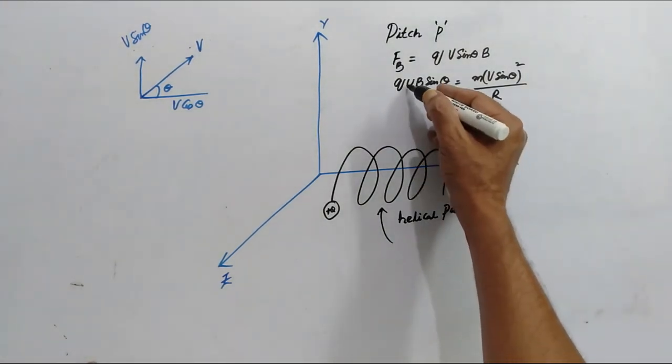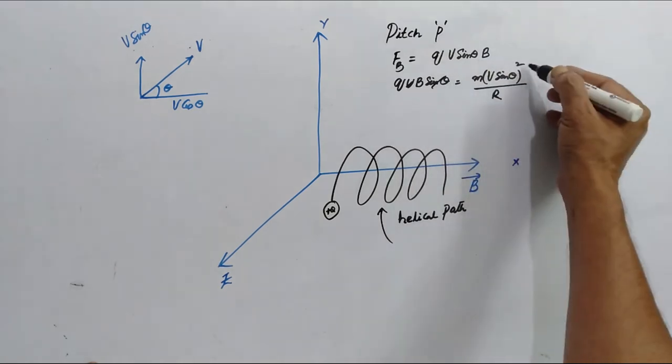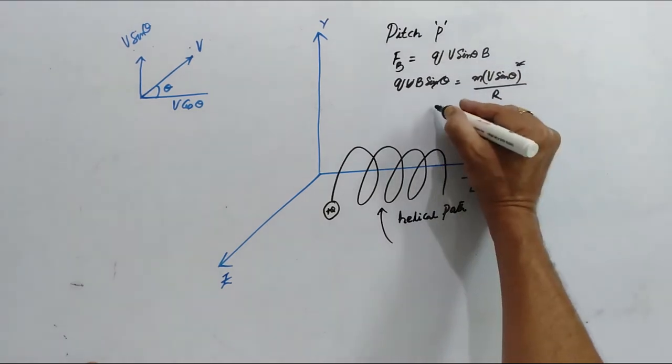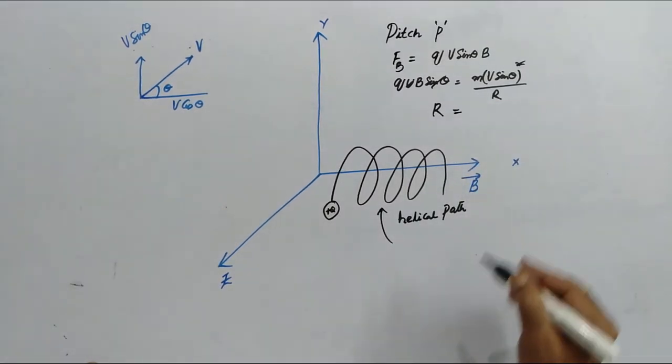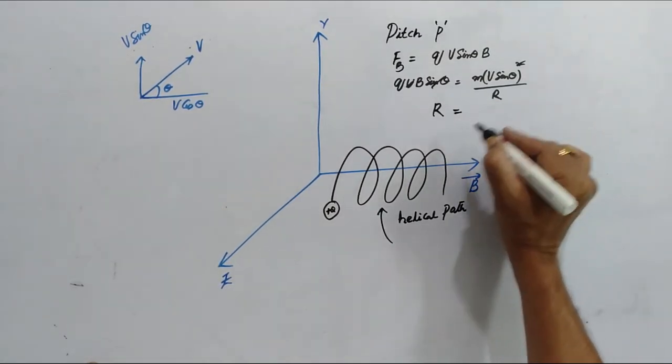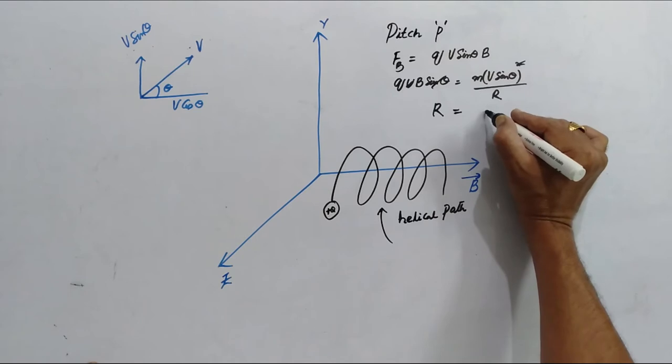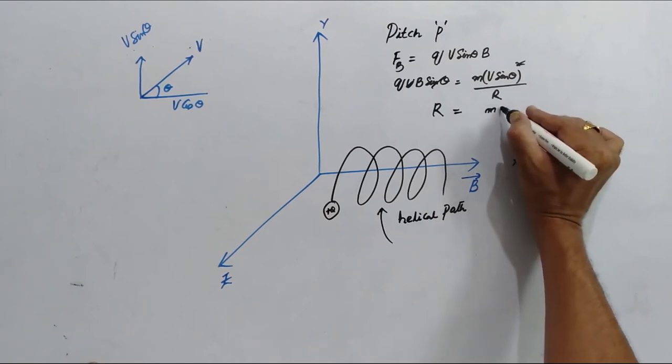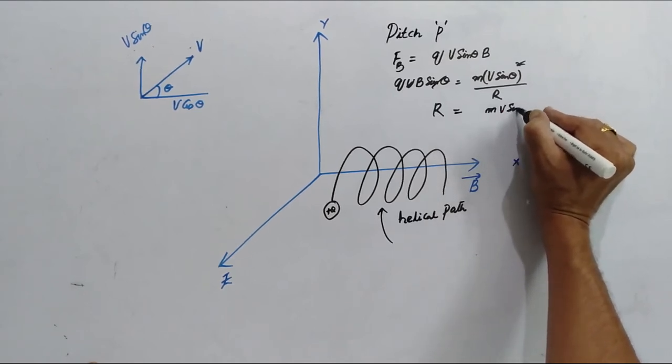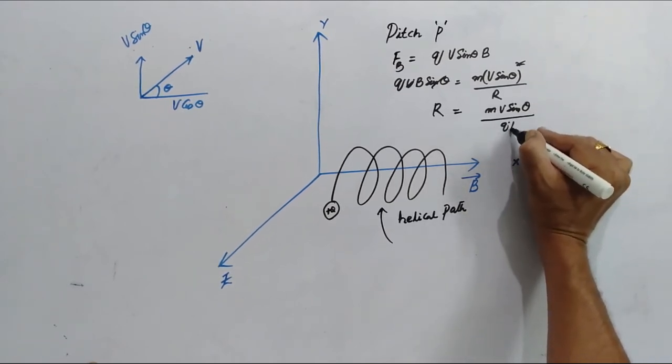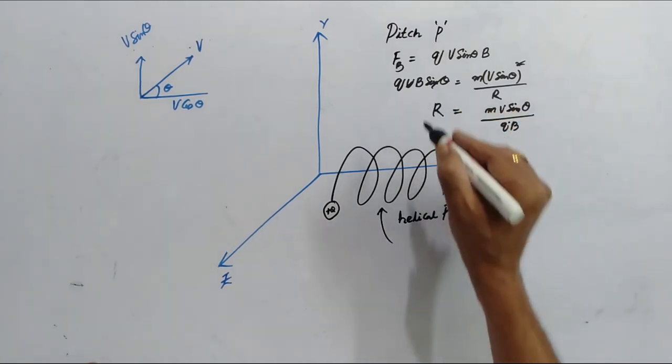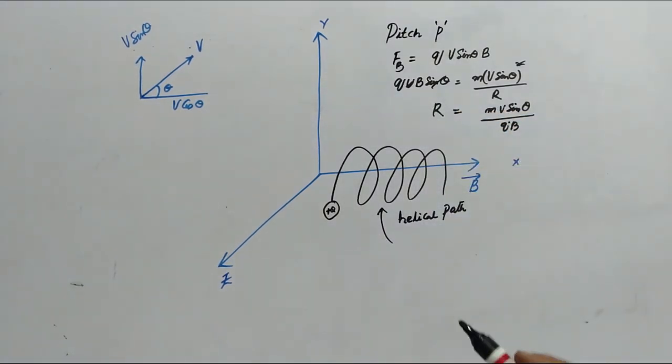Now, you can cancel out one V sin theta on both sides and you can find out the radius of the circular path moved by the projectile. So, that is going to be M V sin theta by Q B. So, this gives us the radius.